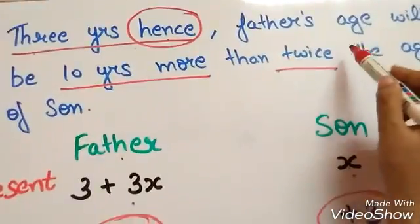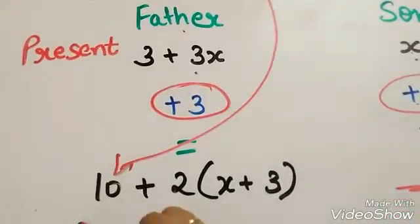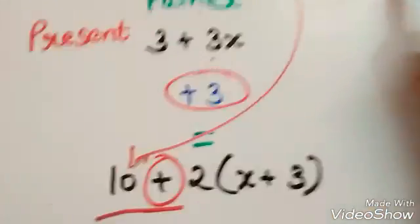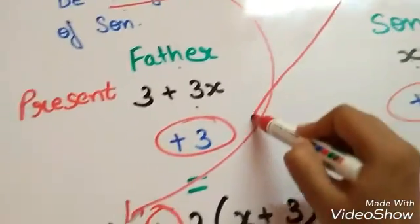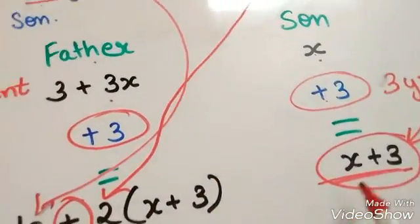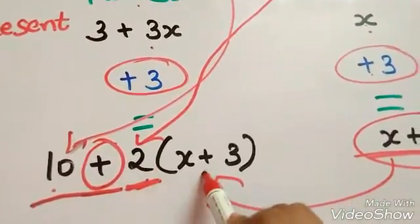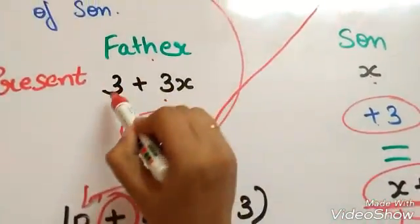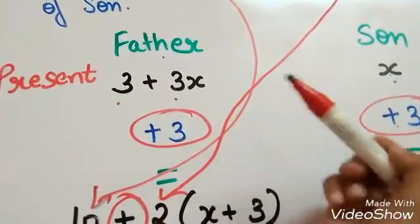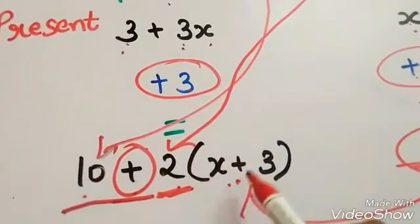After 3 years, father's age will be 10 years more than twice the age of son — that is, 10 plus 2 times (x plus 3). And this is automatically equal to father's age after 3 years, which is his present age plus 3. So: 3 plus 3x plus 3 equals 10 plus 2x plus 3.